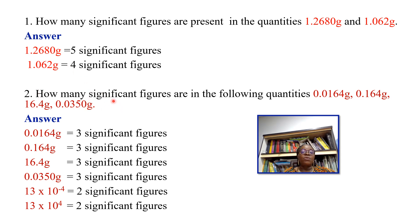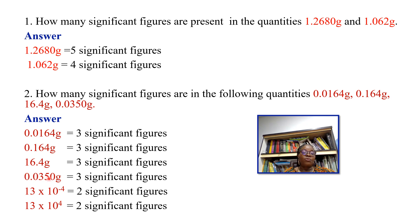How many significant figures are in the following? 0.0164 grams: the leading zeros are non-significant, so there are 3 significant figures. 0.164 grams has 3 significant figures. 16.4 grams has 3 significant figures. 0.0350 grams: the leading zeros are non-significant, but the trailing zero after the decimal is significant — giving 3 significant figures.